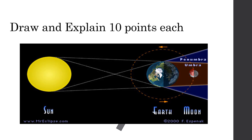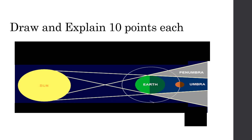Next, you also need to draw this and then explain it. Write your explanation. After that, explain the types of eclipse. To repeat: you need to draw it in your science lecture notebook, take a picture, and send it to your Google Classroom. Pictures from the internet are not allowed — I want hand-drawn pictures with explanations. 10 points each picture.